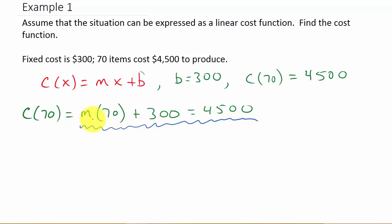See, I can solve for m. I already know what b is, but I need to know what m is. So that's going to give me 70m plus 300 equals 4,500. So then if I subtract 300 from both sides, I get 70m equals 4,200. Divide everything by 70. And so that's going to give me m equals 60.